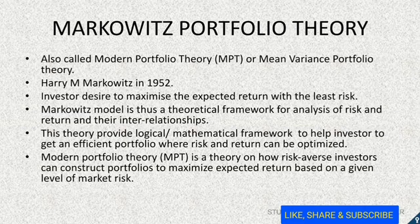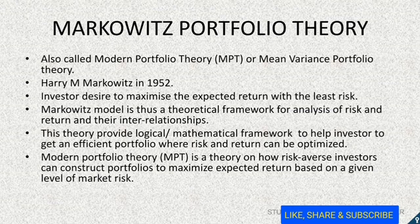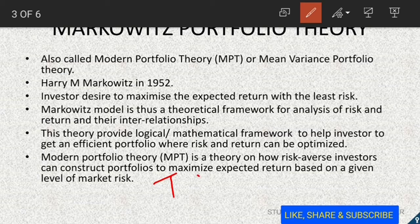A portfolio is efficient if the expected yield is highest at the given level of risk, or achieved at the lowest risk. To build an efficient set of portfolios, we should look at three important parameters: first, the expected return; second, the variability of return, measured by standard deviation; and third, the covariance of one asset's return relative to another. In general, higher expected return, lower standard deviation or variance, and lower correlation result in an efficient portfolio.